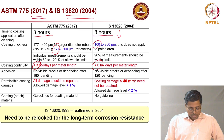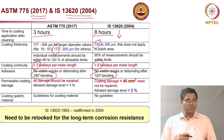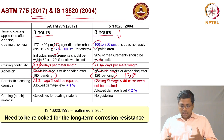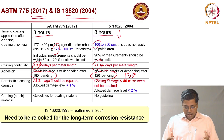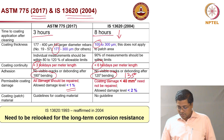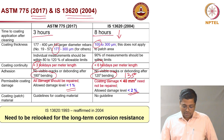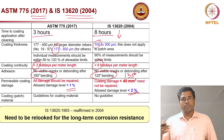ASTM requires no visible cracks or debonding after 180-degree bending, whereas IS specifies only up to 120 degrees. For earthquake-resistant structures, stirrups are bent to about 135 degrees, so the test angle should be more than 135 degrees. Allowable damage level on the coating: ASTM says less than 1 percent, IS says up to 2 percent or 40 square millimeters. These specifications need to be made more stringent to ensure structures are going to be durable.